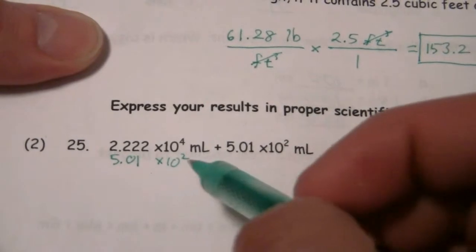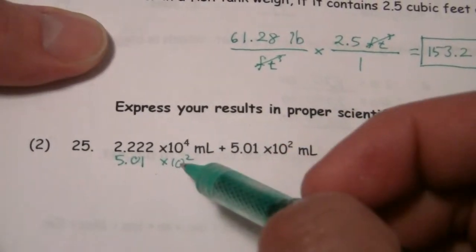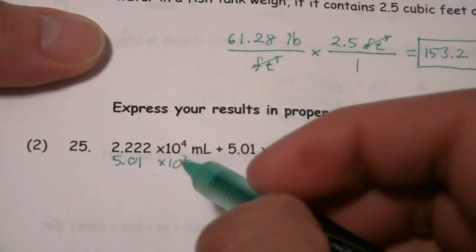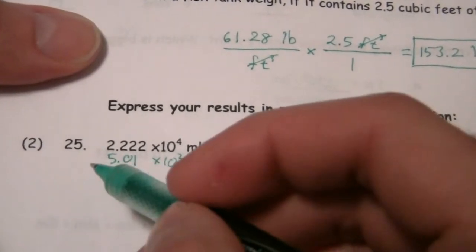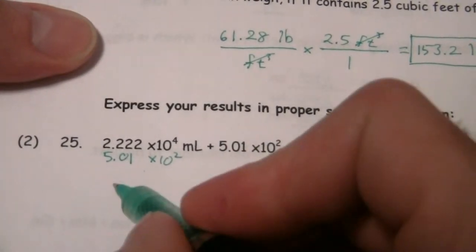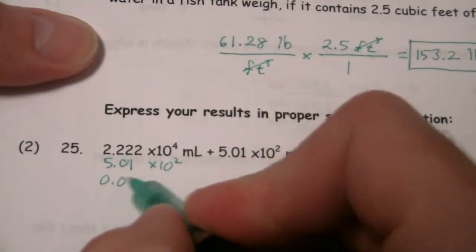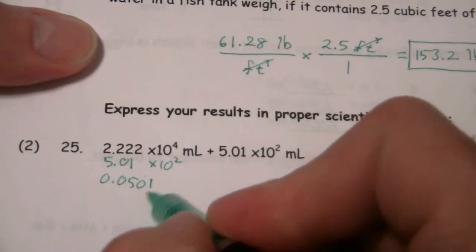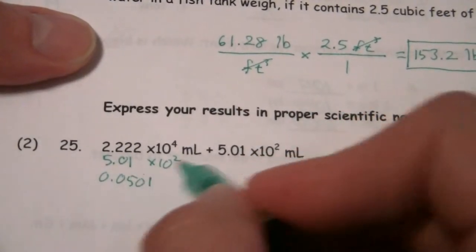And what we'll end up with is if we want to move this four places to the right to get to where it only has to go two places now. So I have to be two places further back. So what I'll end up with is 0.0501. So now I move four places to get it to where here I only had to move two.